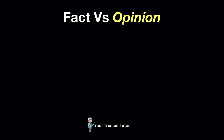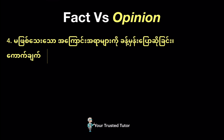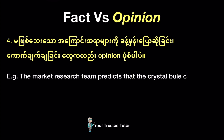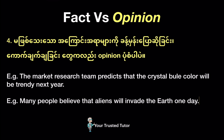The last but not least, Tip number four: guessing future events, talking about uncertainty, and making inferences from past information are also considered as opinions. For instance, 'The market research team predicts that the crystal bale color will be trendy next year.' 'Many people believe that aliens will invade the earth one day.'